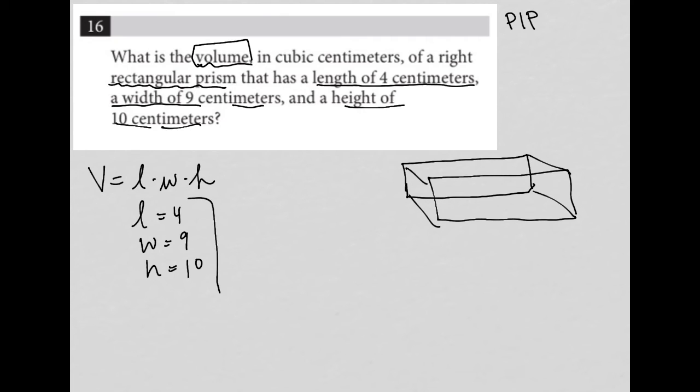So all I'm really doing is multiplying these three numbers by each other. Four times nine times 10. Four times nine is 36, and then 36 times 10 gives me 360. So the final answer here is 360.